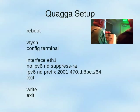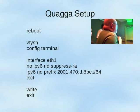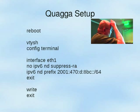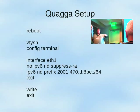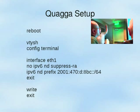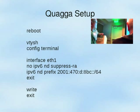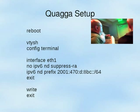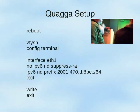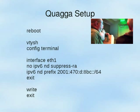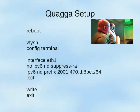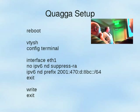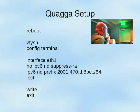In the VTYSH interface, we type 'interface eth1' and turn off the suppression of router advertisement on that interface. By doing that, it's going to start saying 'I'm a router, come send me your packets' for IPv6. We add our network discovery prefix — the internal /64 that we got from tunnelbroker — then exit, write, and exit.